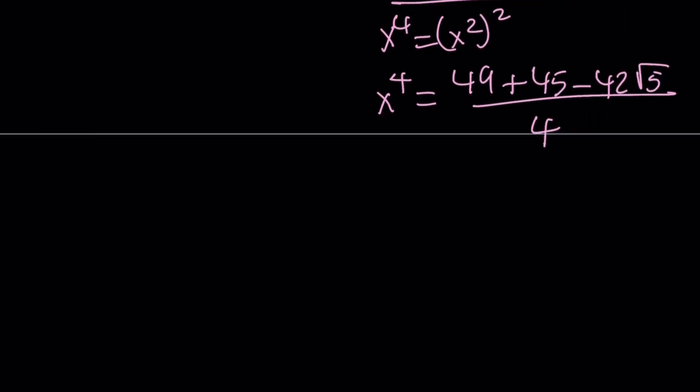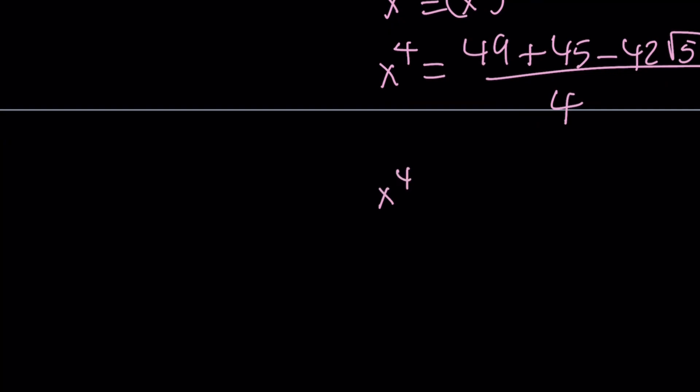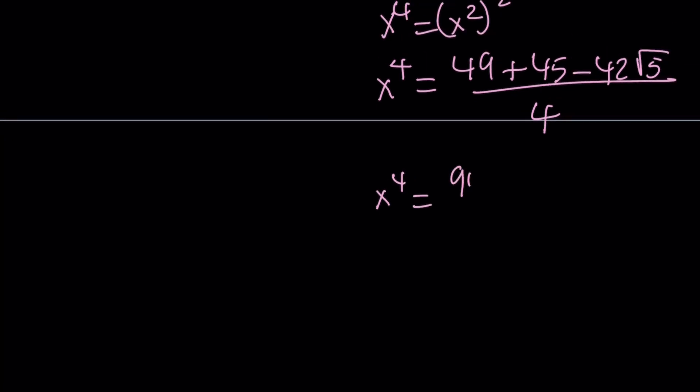49 plus 45 is equal to 94. 94 minus 42 root 5 over 4. And as you can see here, everything is divisible by 2, not by 4, by the way. We can go ahead and do that. So half of 94 is 47 minus 21 root 5 over 2. So that's going to be the value of x to the fourth power.